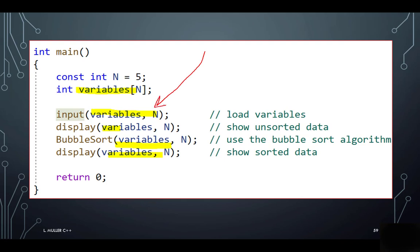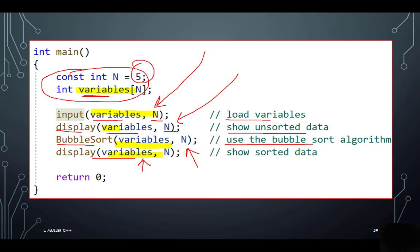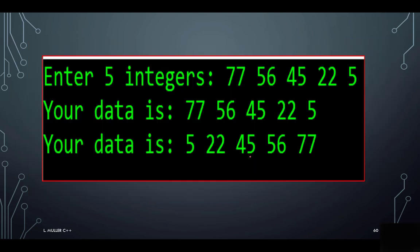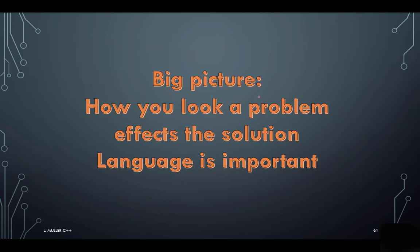Now, because I encapsulated everything, my main program becomes this beautiful small piece of code that says, here are my, I called it variables instead of d. And how many variables are there? Five. What do I want to do? Get the variables inputted. And here I put a comment, load them. Now I want to display the variables. How many? All of them. Show them unsorted. Then I use my bubble sort algorithm, comment, and then I display. Notice, I reused display to show the unsorted data and to show it sorted. There's the output sample run of the program.